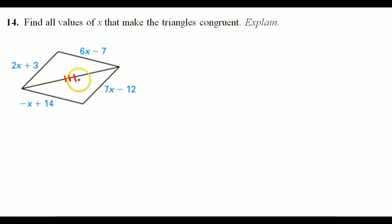But one possible way that these triangles could be congruent is that maybe, for example, this side, the 2x plus 3, is congruent to this side, the 7x minus 12. We don't know that for a fact, but this is something that we can try. If that's the case, then that would mean this side, negative x plus 14, would be congruent to this side, 6x minus 7. So let's imagine that this is the way that the triangles are congruent. There's only one other possible way, so let's just try this one and see if it works.